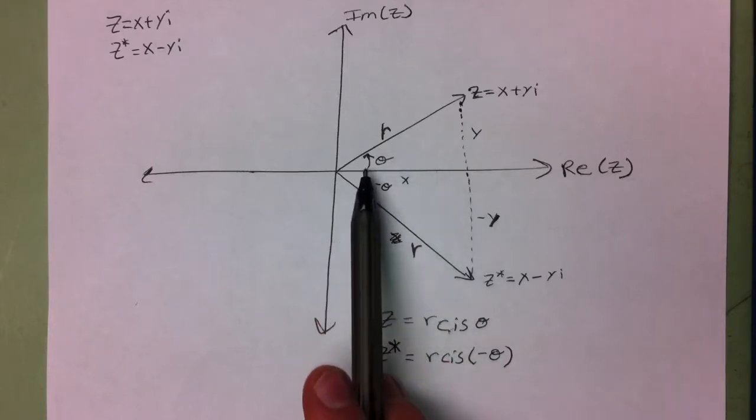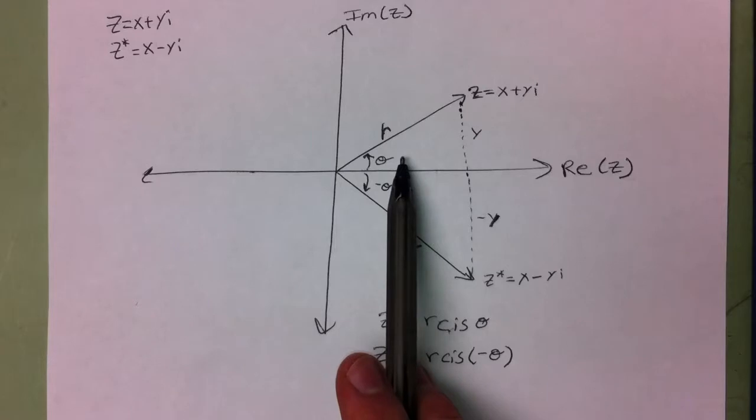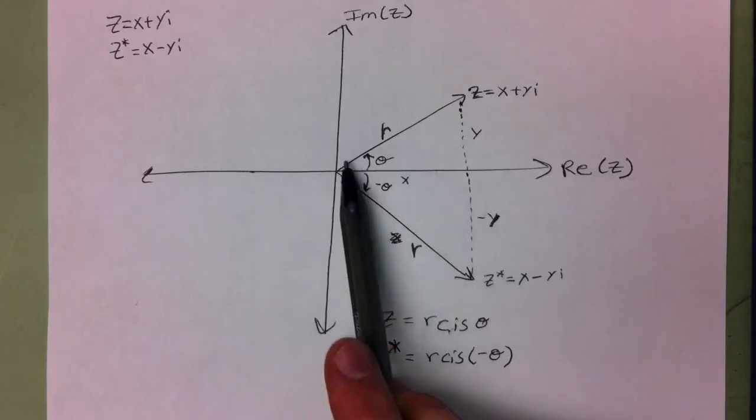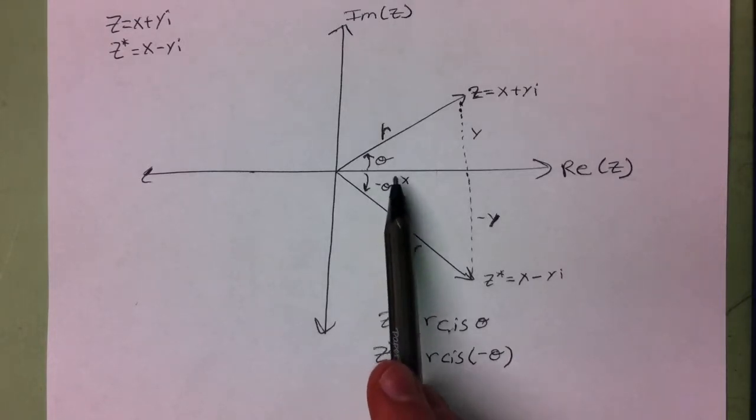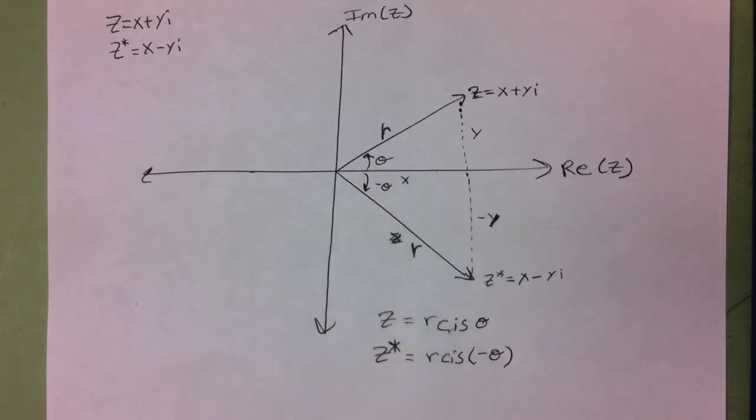However, with z, we went up theta from the real axis. However, with z-conjugate, we went down by theta, and so the angle is negative theta, because we're going below the real axis.